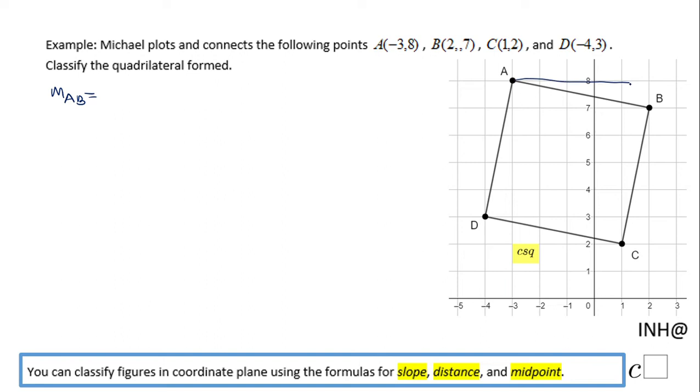For the slope, I'm gonna use this triangle since I have the picture. And the rise is 1, the run is 5, and it's going down from left to right so it's negative 1 over 5.